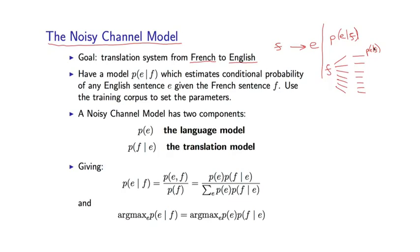Now, in a noisy channel model, we're again going to use a generative model, and we're going to use Bayes' rule to kind of flip this problem around. So here's how this goes. A noisy channel model for translation is going to have two components.